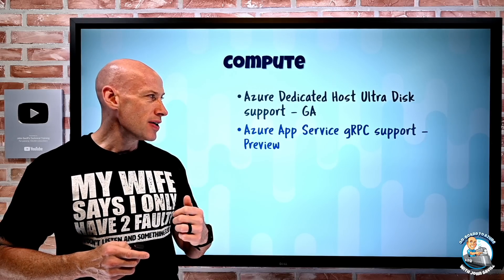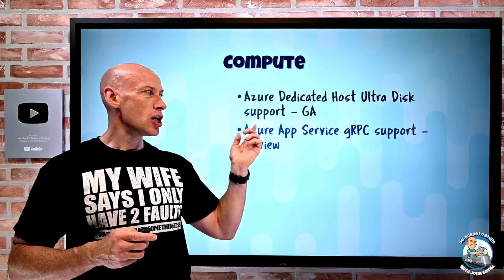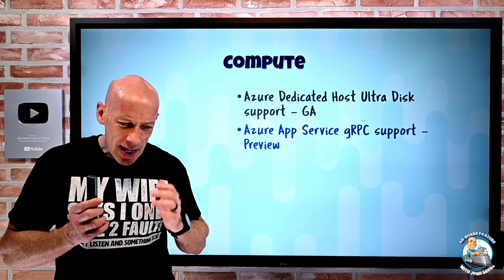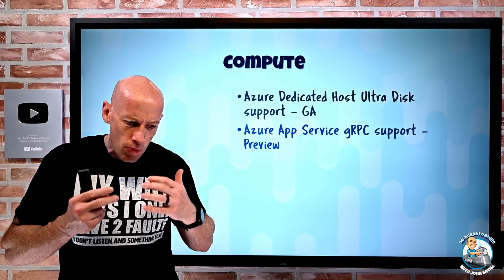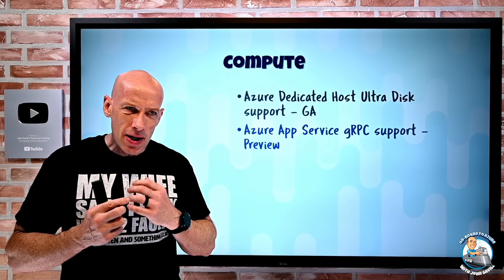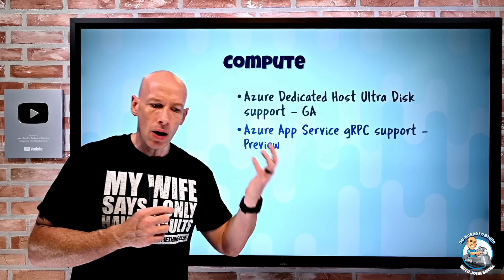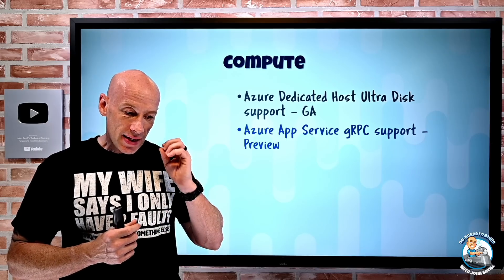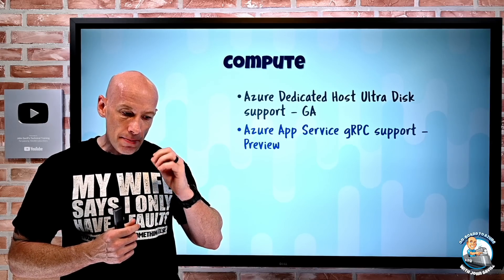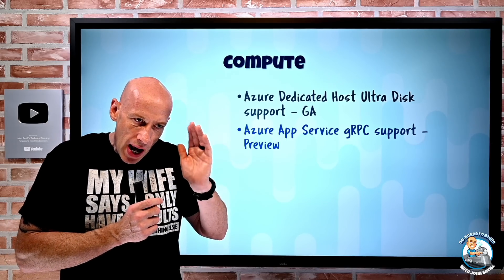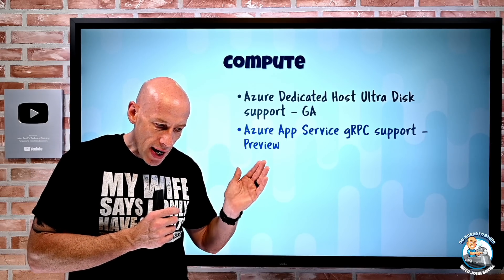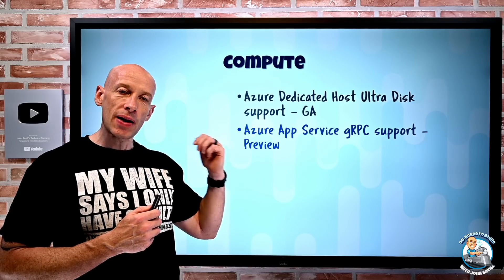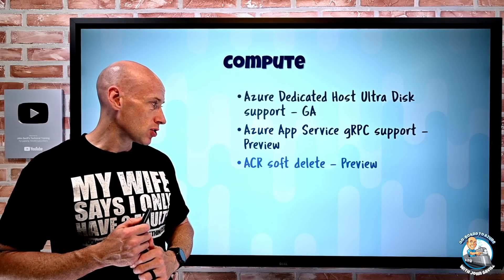Azure App Service now has gRPC support. Basically it lets me use the remote procedure call framework, so messages between my client and my server can leverage HTTP/2. That's really good for things like multiplexing — sending multiple parallel requests over that same connection. This is available for Linux workloads on App Service.